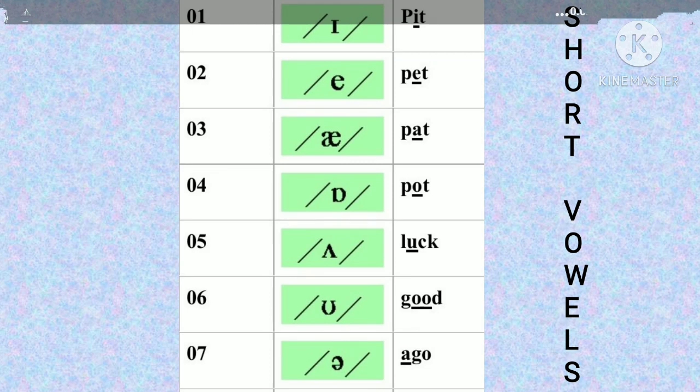The third short vowel is /æ/ as in 'pat'. The fourth one is /ɒ/ as in 'pot'. The fifth one is /ʌ/ as in 'luck'. The sixth one is /ʊ/ as in 'good'. The seventh one is /ə/ as in 'ago'. These are the 7 short vowel sounds in English.